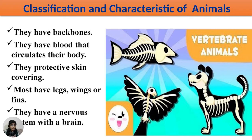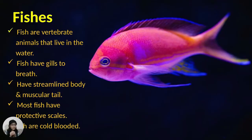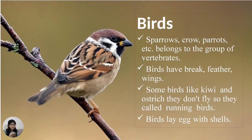Fishes are vertebrate animals that live in water. Fish have gills to breathe, streamlined bodies, and muscular tails to move in water. Most fishes have protective scales. Fishes are cold-blooded.